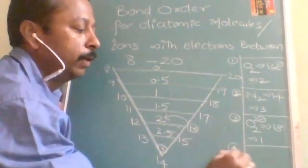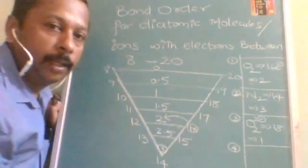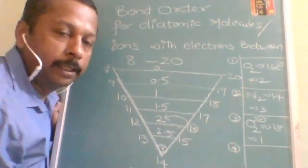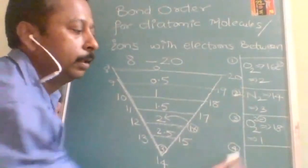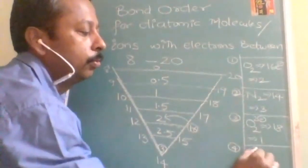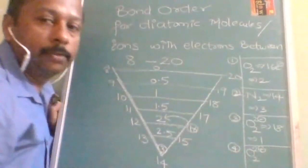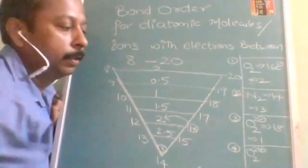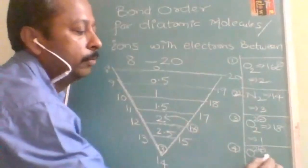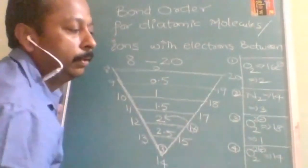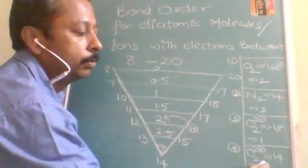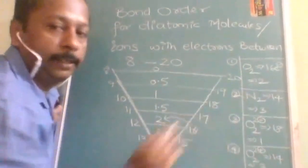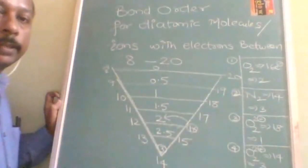OK, now I am taking one more example. One more example. By mistake, it may be applicable to this, it can be applicable to anything. Let us say O2 2 positive. Positive charge also it is applicable. Positive charge also it is applicable: 16 minus 2, that is 14 electrons. OK, you can write and cross check. It is also going to have bond order of 3. Bond order of how much? 3.